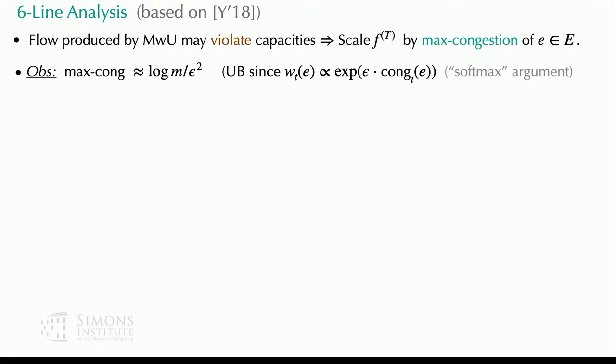The algorithm never maintains explicit feasibility — the Garg-Konigman algorithm never enforces feasibility, and the final flow may violate some capacity. We scale down the returned flow by the maximum congestion to respect edge capacities. The claim is that the maximum congestion is not too bad — it's log m over epsilon squared — so we only lose a log m factor. The maximum congestion is at least that because this was our termination condition: we stopped when we congested an edge.